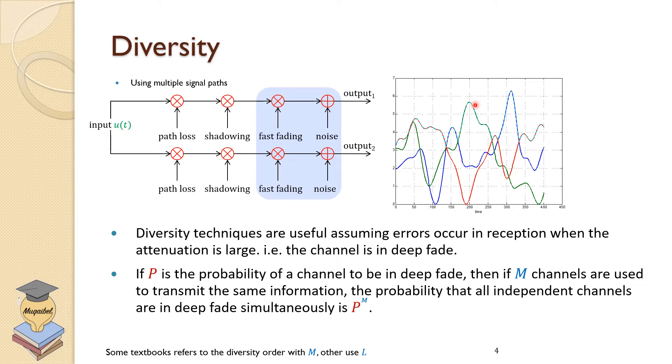If p is the probability of the channel to be in deep fade and then we are transmitting over L different channels, then the probability that all of them are going to be in deep fade is p raised to power L.